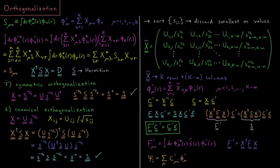The first case is what we would call symmetric orthogonalization, where the transformation matrix we're going to use is actually the inverse square root matrix of the S matrix itself. For matrices, just like for variables or functions, the square root of a matrix is the matrix you have to multiply by itself to get that matrix back, and the inverse is the matrix you multiply by to get an identity matrix. So the S to the minus one-half matrix follows in a similar vein.